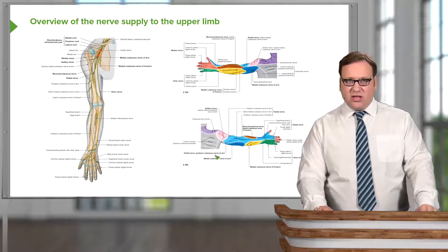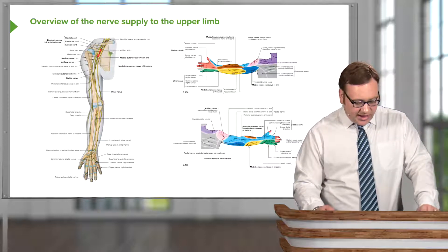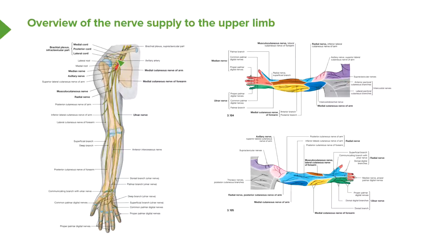On the right-hand side of the screen, we can see an overview of the brachial plexus and the three cords coming away from it: the medial, posterior and lateral cord. The medial and the lateral cord give rise to the musculocutaneous, the median and the ulnar nerves, and the posterior cord gives rise to the radial and the axillary nerve. We're going to look at those specific nerves and how damage to them can lead to sensory and motor deficits.